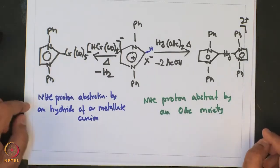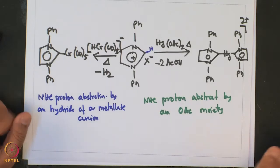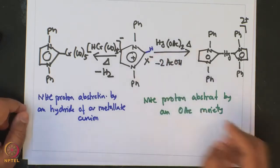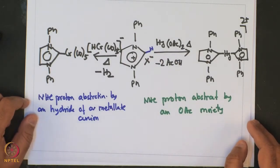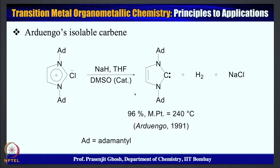This is a very elegant route whereby the NHC precursor is converted to transition metal NHC complexes. As mentioned, Erdengo succeeded in preparing free NHCs by putting steric bulk on the nitrogen substituents, which prevents the free carbene from dimerizing. This was successfully done by using adamantyl as the N-substituents, which led to isolation of the free carbene.